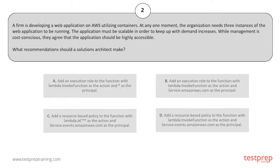Your options are: A. Add an execution role to the function with the required action and Amazon AWS as the service principle. B. Add a resource-based policy to the function with the required action and events.AmazonAWS.com as the principal. C. Add a resource-based policy to the function with the required action and events.AmazonAWS.com as the principal. D. Add a resource-based policy to the function with the required action and events.AmazonAWS.com as the principal.